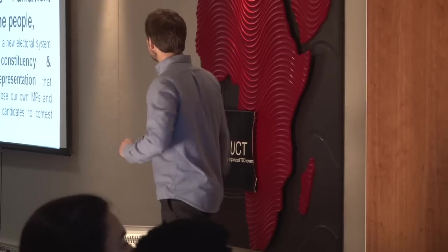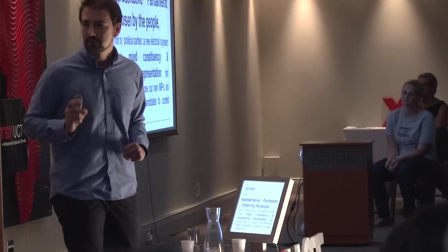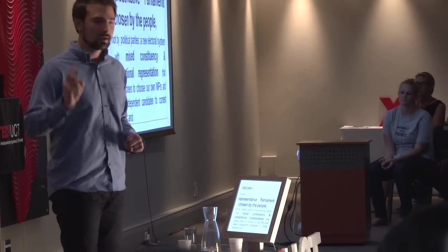And what we're trying to do is create opportunities for citizens to be connected to democracy again. We're asking for two key reforms. The first is, we want a representative parliament chosen by the people, not by political parties. A new electoral system with mixed constituency and proportional representation that allows voters to choose their own MPs and allows independent candidates to contest elections.